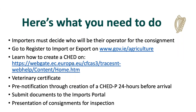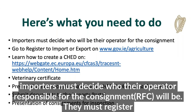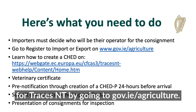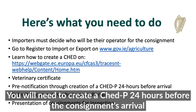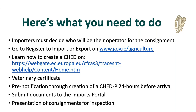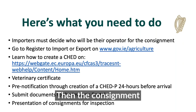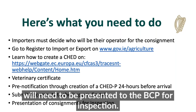In summary: importers must decide who their RFE will be and must register for TRACES by going to the gov.ie agriculture website. Guides for creating CHEDs can be found on the Commission's TRACES website. You will need a veterinary health certificate and must create a CHED-P at least 24 hours before the consignment's arrival at the BCP. Documents will need to be submitted through the import portal, and the consignment will need to be presented to the BCP for inspection. A webinar is also available on this process.